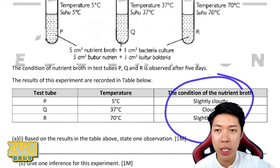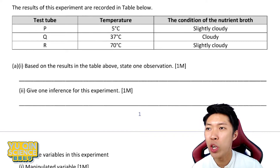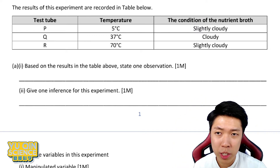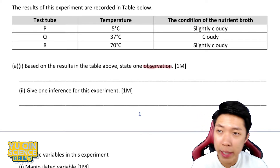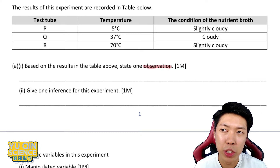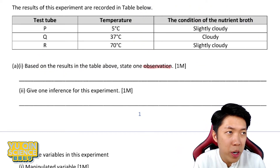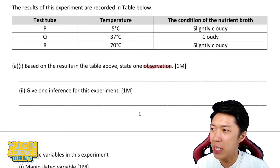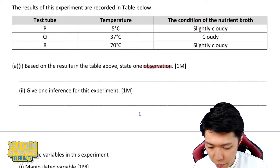Based on the results, the first type of question in Section A asks for observation. Observation means say what you see — be childish, be very surface, don't write too much explanation. From what we have here, at 37°C the nutrient broth is very cloudy. Say what you see. Let's form this into sentences.